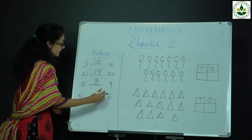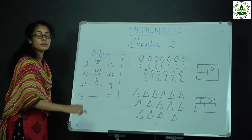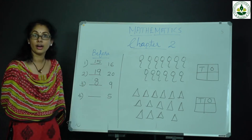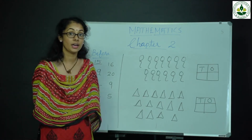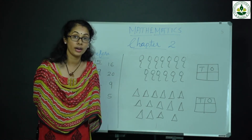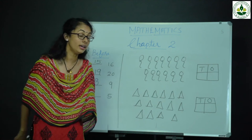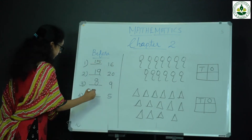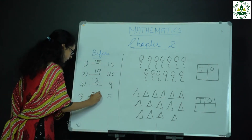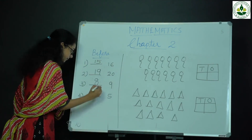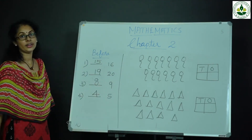Which number comes before 5? Which number comes before 5? Number 4.